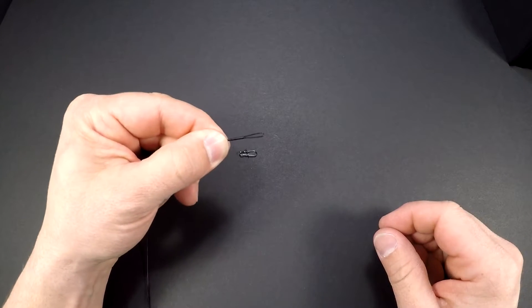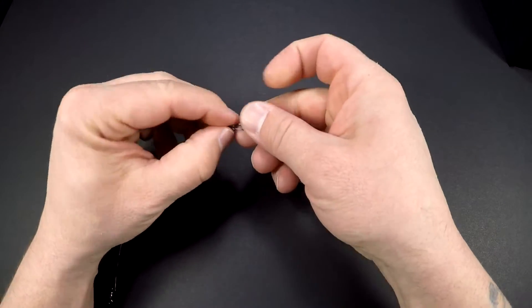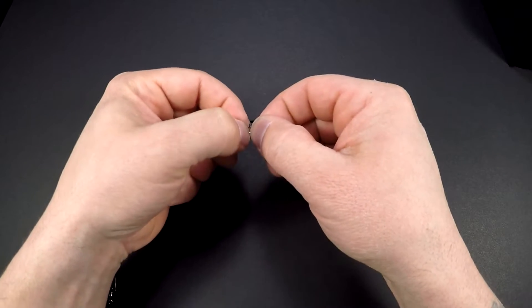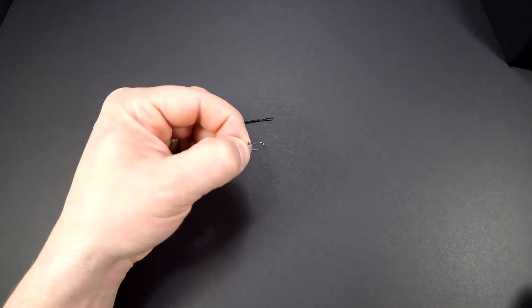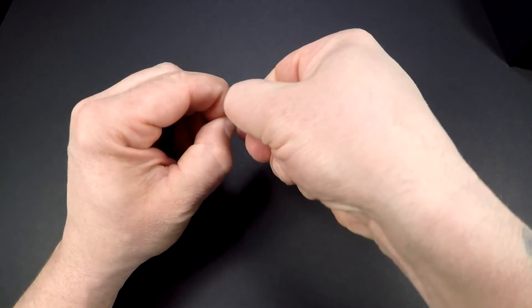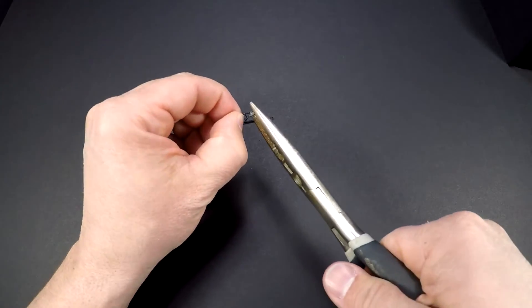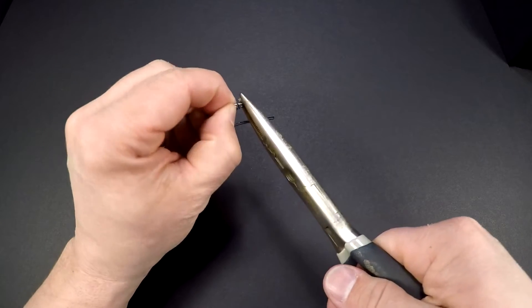Now you have a loop just like that. Next thing you're going to want to do is open up the fast lock snap like that, and then open up the other end.